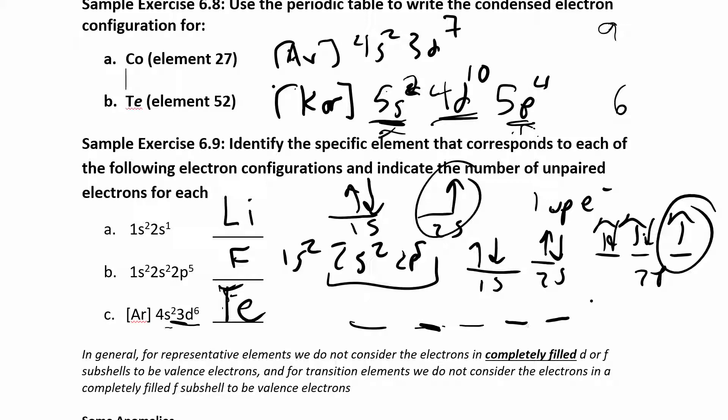And I have 1, 2, 3, 4, 5, 6. So the rest of these are unpaired. So I have 4 unpaired electrons there. Total valence electrons, in this case, I would have 8 valence electrons. 4 of them are not paired.